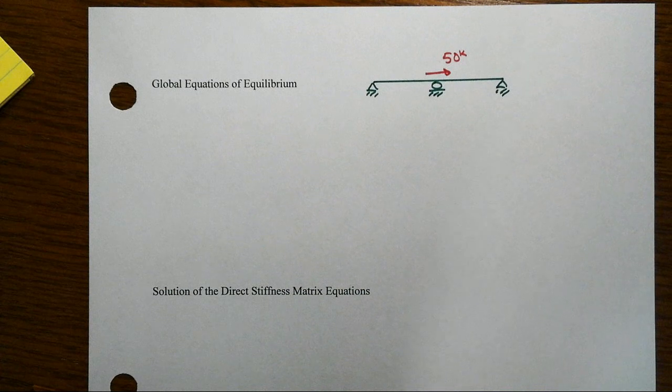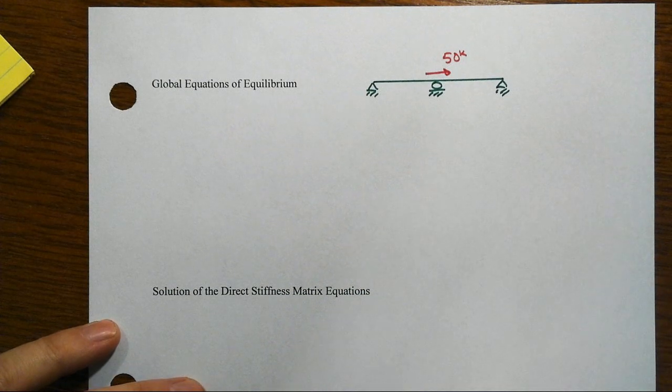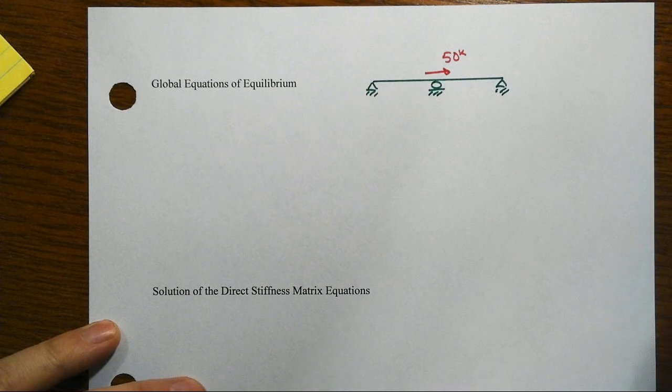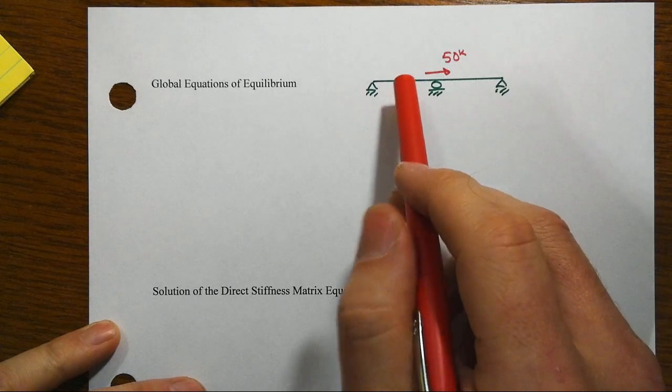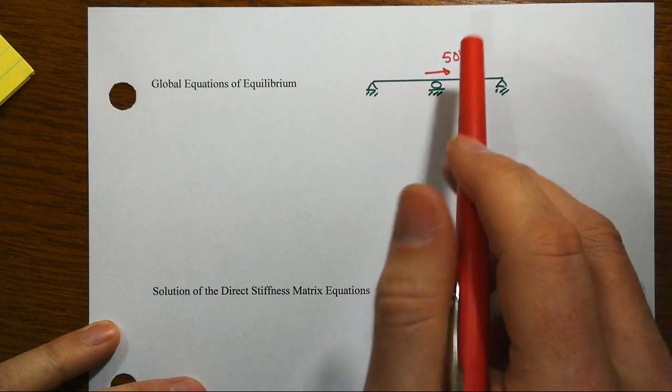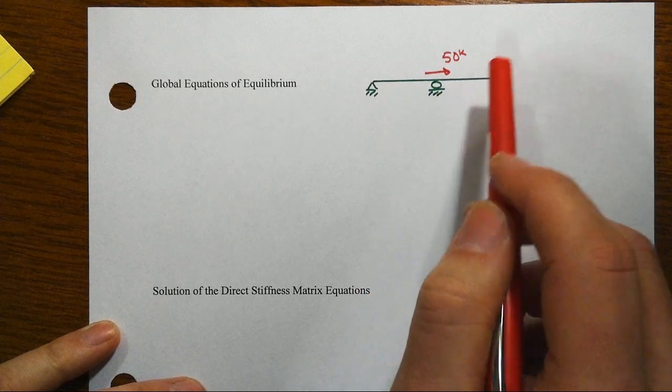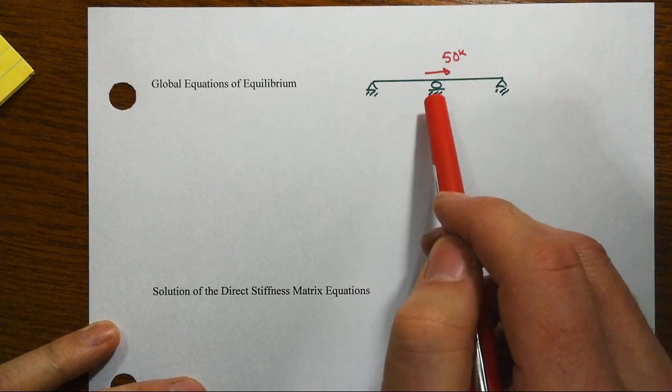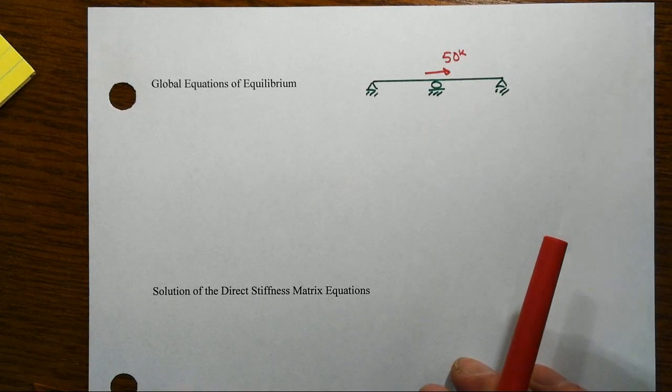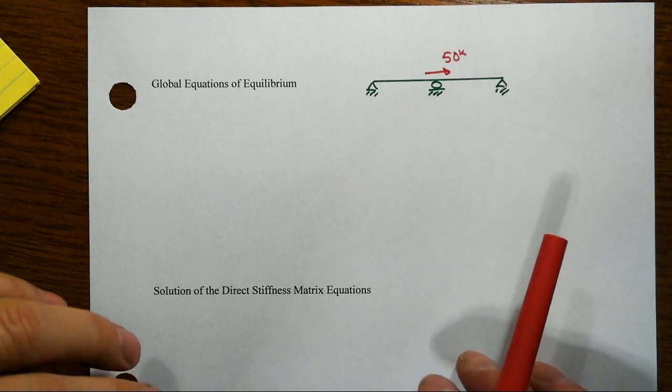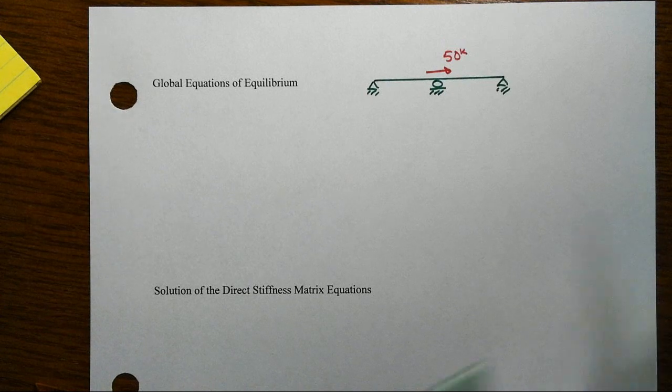Alright, so now let's actually solve this problem. Remember what we were really working with: two truss members that were identical, seven and a half feet each, with a 50 kip applied load here in the middle. We have already looked at the global equations of equilibrium when we assembled that stiffness matrix.